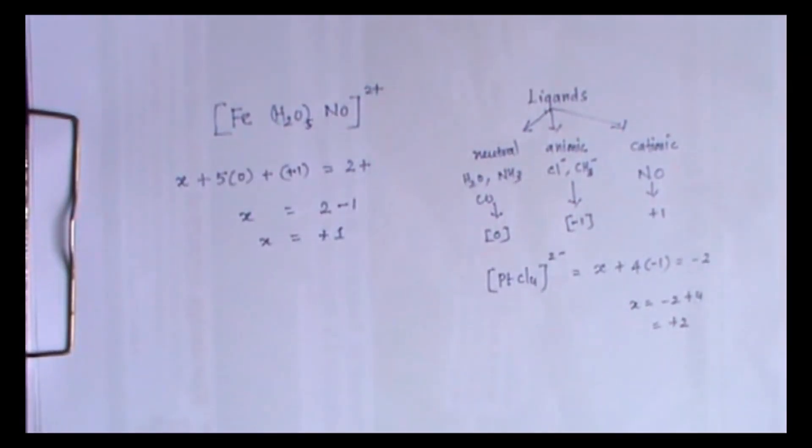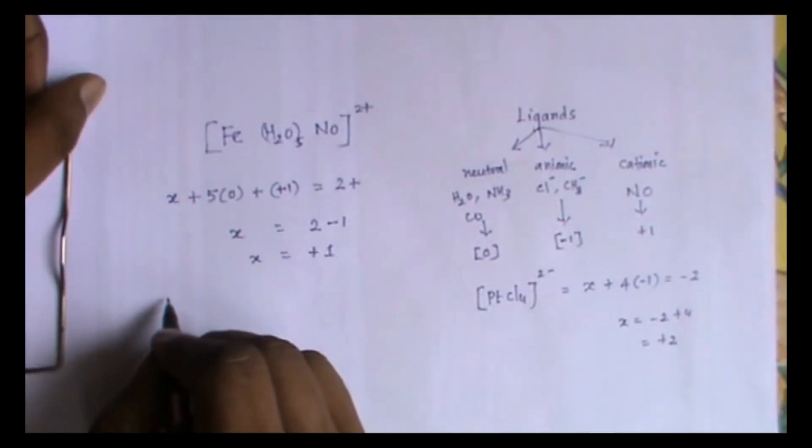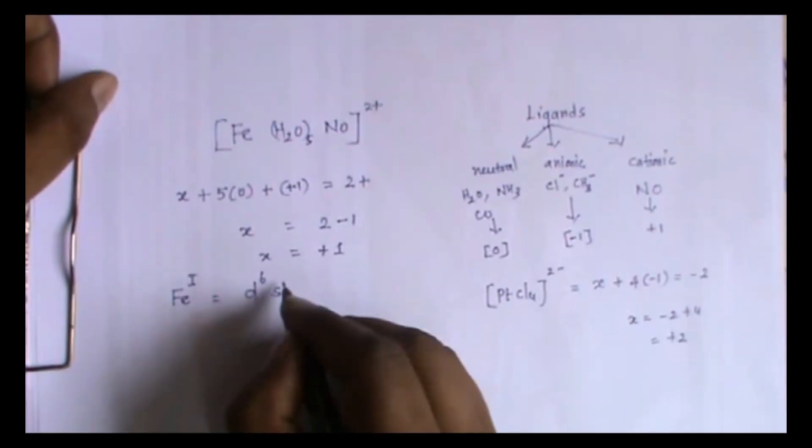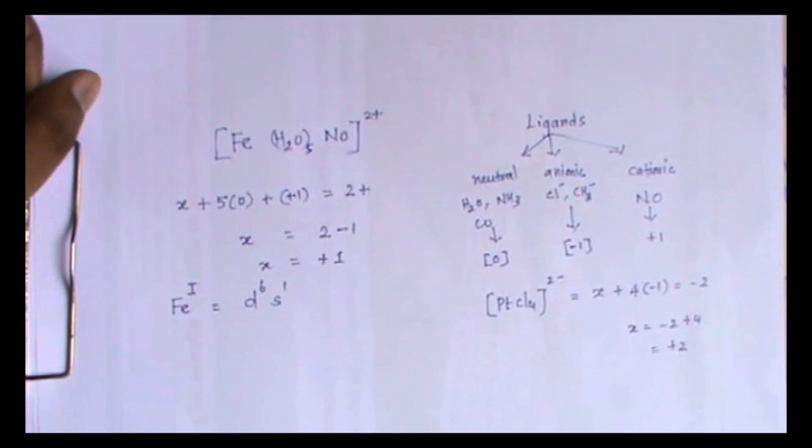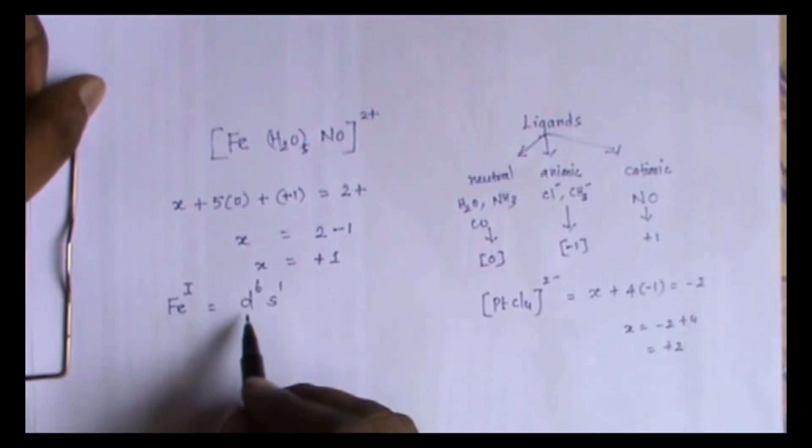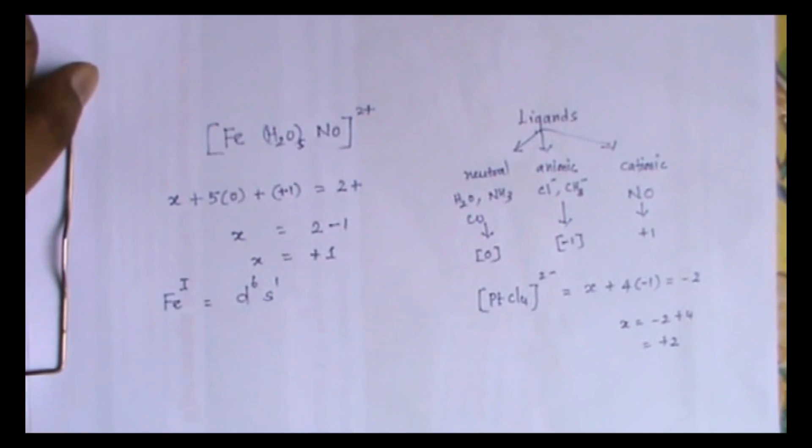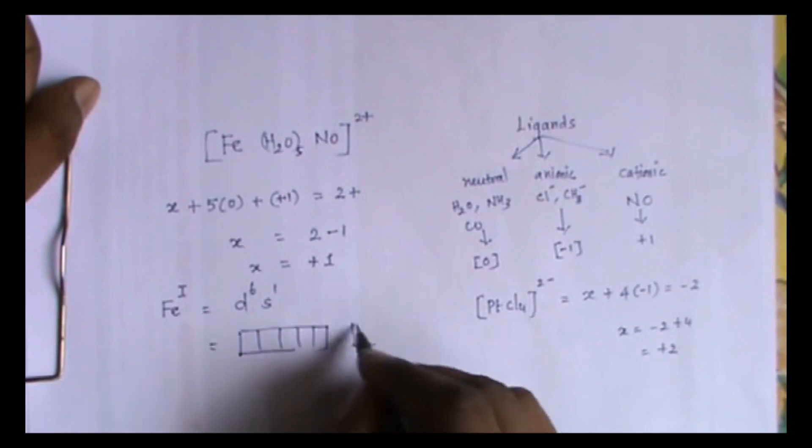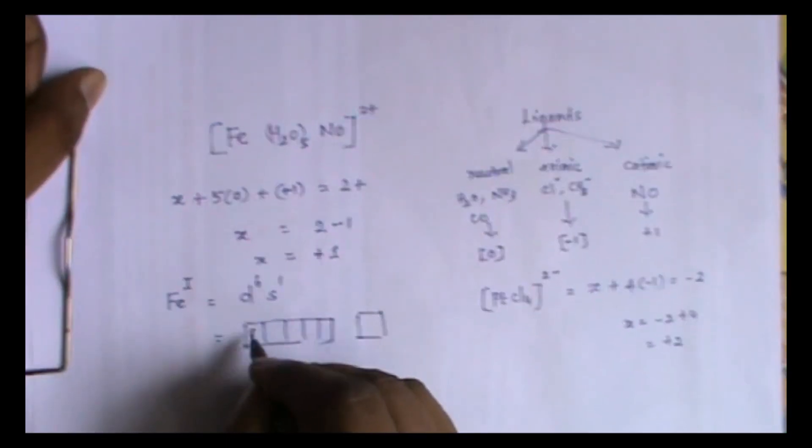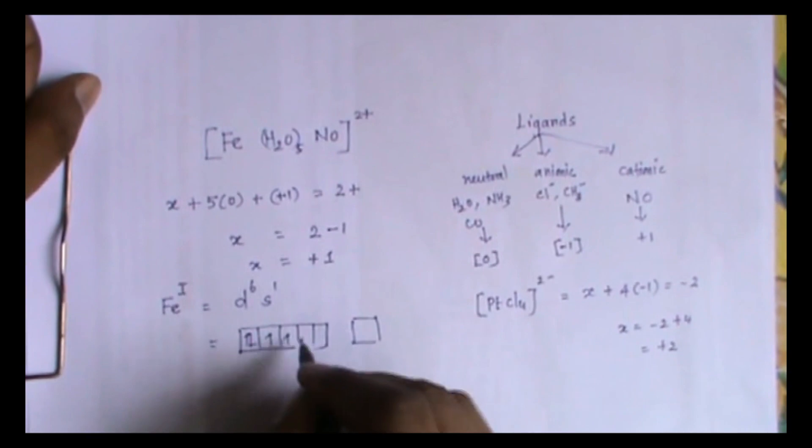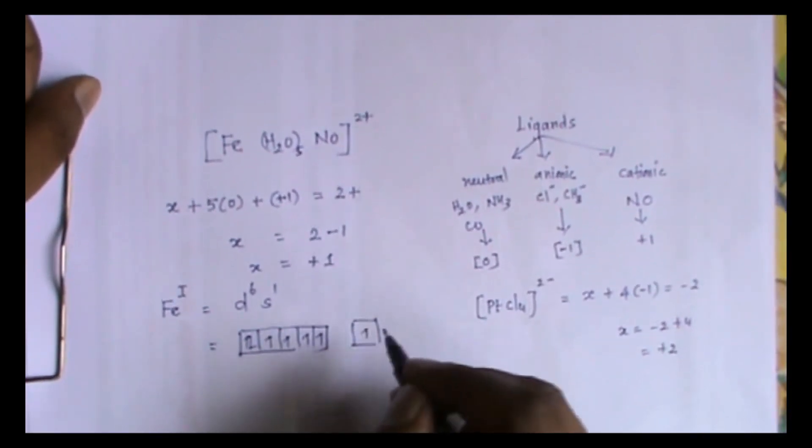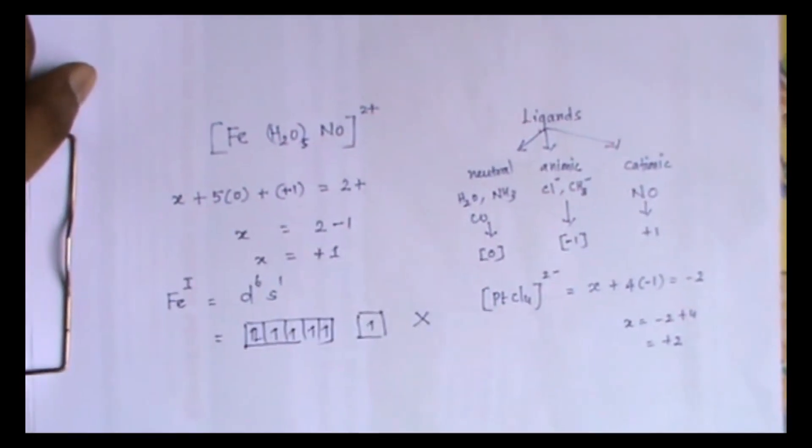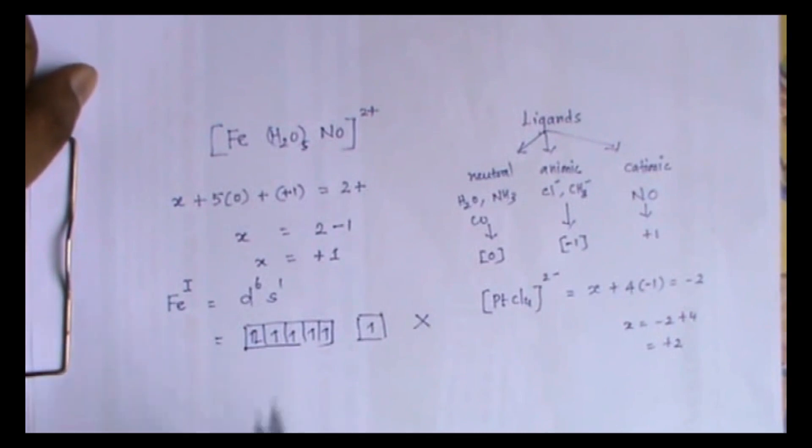Now let's try to find out the electronic configuration for Fe+1. This will be the arrangement of electrons in d orbital, there will be 6, in s orbital there will be only one. Let's place 6 electrons here, one electron here. Generally students do like this and this is wrong. And they get 5 as answer.